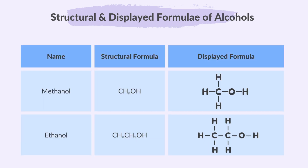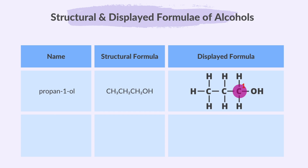Here are the structural and displayed formulas for alcohols containing up to four carbon atoms per molecule. For methanol and ethanol, numbering is not needed: methanol has just one carbon so the hydroxyl group is always attached to it, and ethanol has two carbons with the hydroxyl group always attached to the first carbon. In propan-1-ol, the OH group is on the first carbon atom. We start numbering from the end closest to the OH group, so this end carbon is carbon number one, and the numbering continues to two and three. With three carbon atoms starting with 'prop' and the OH group ending with 'ol', the name is propan-1-ol.